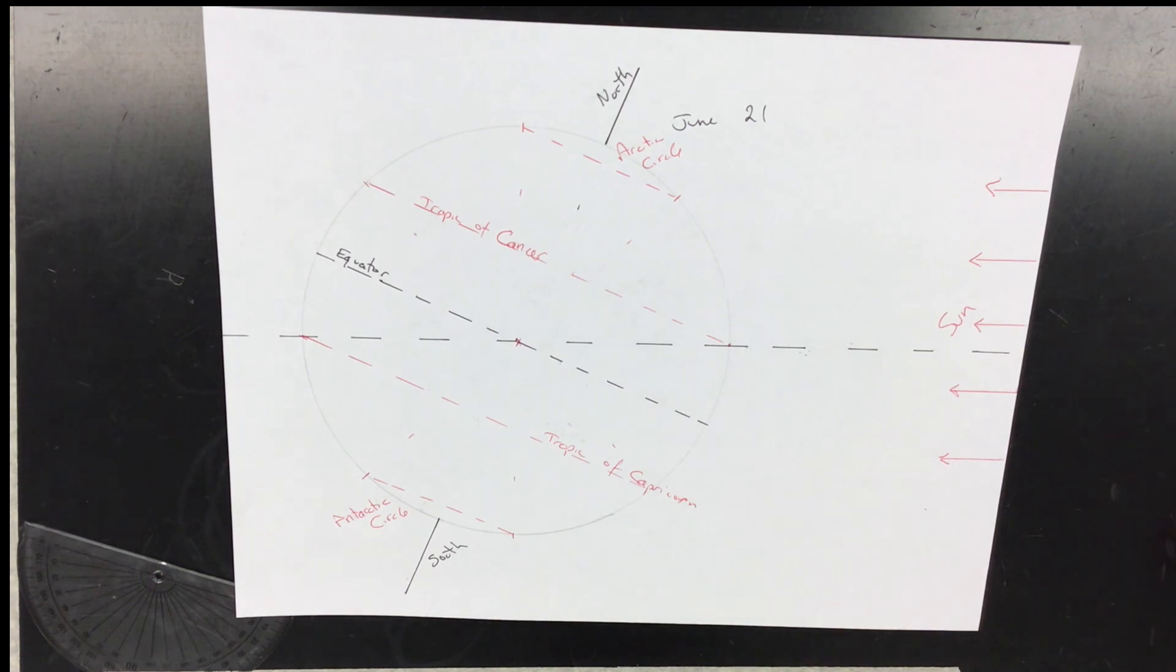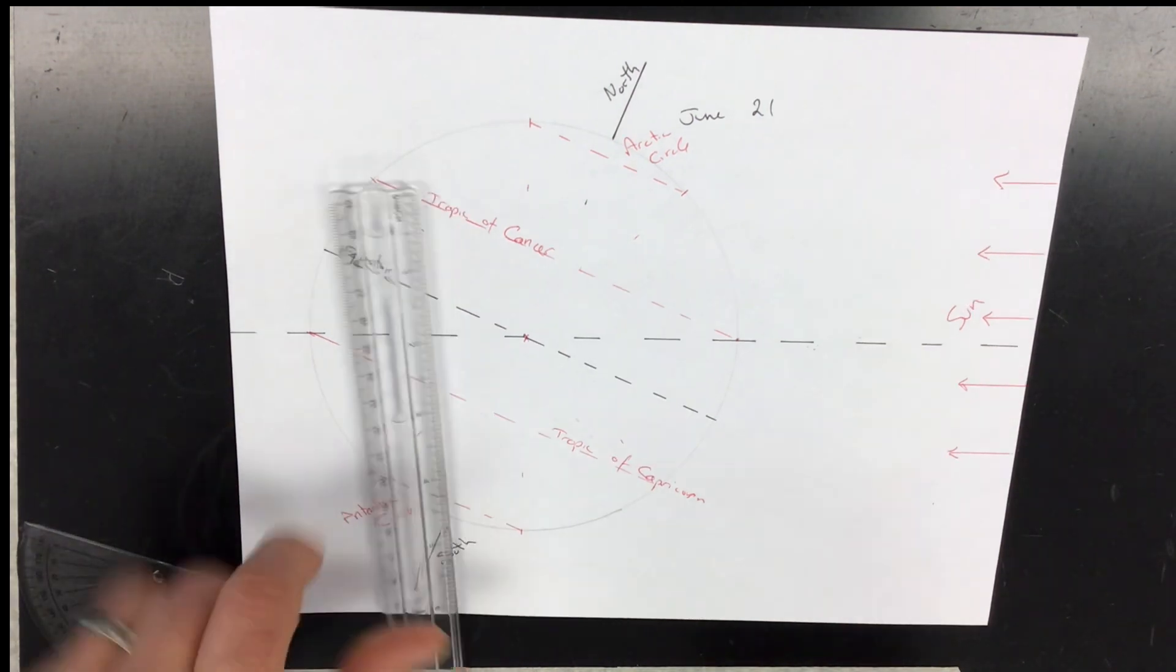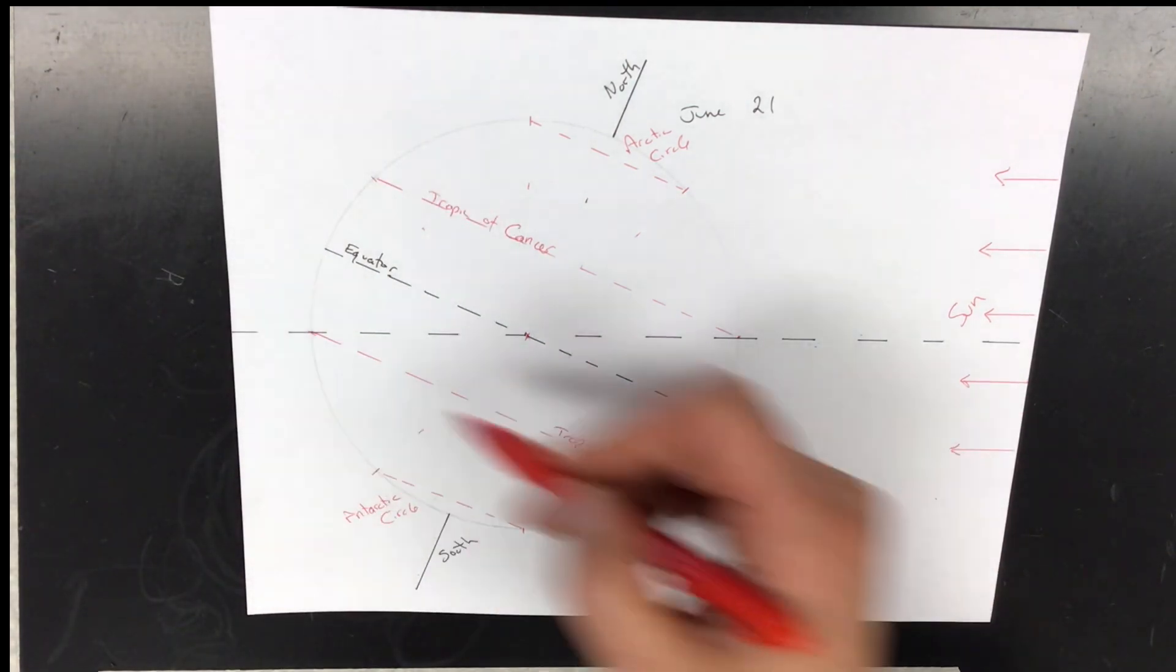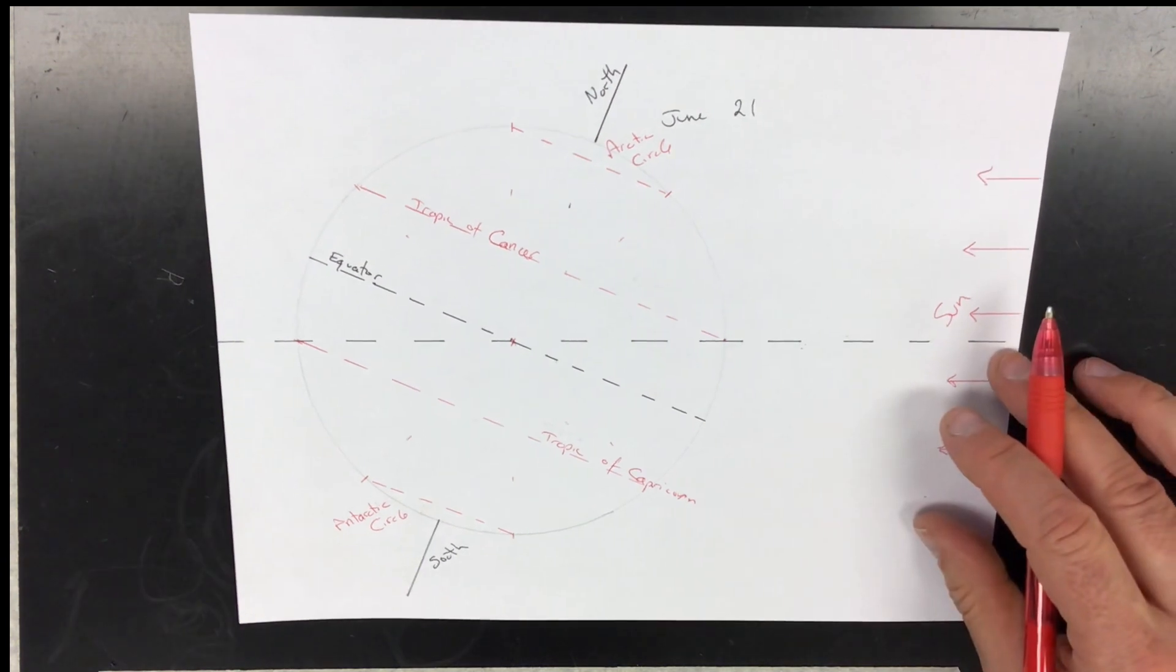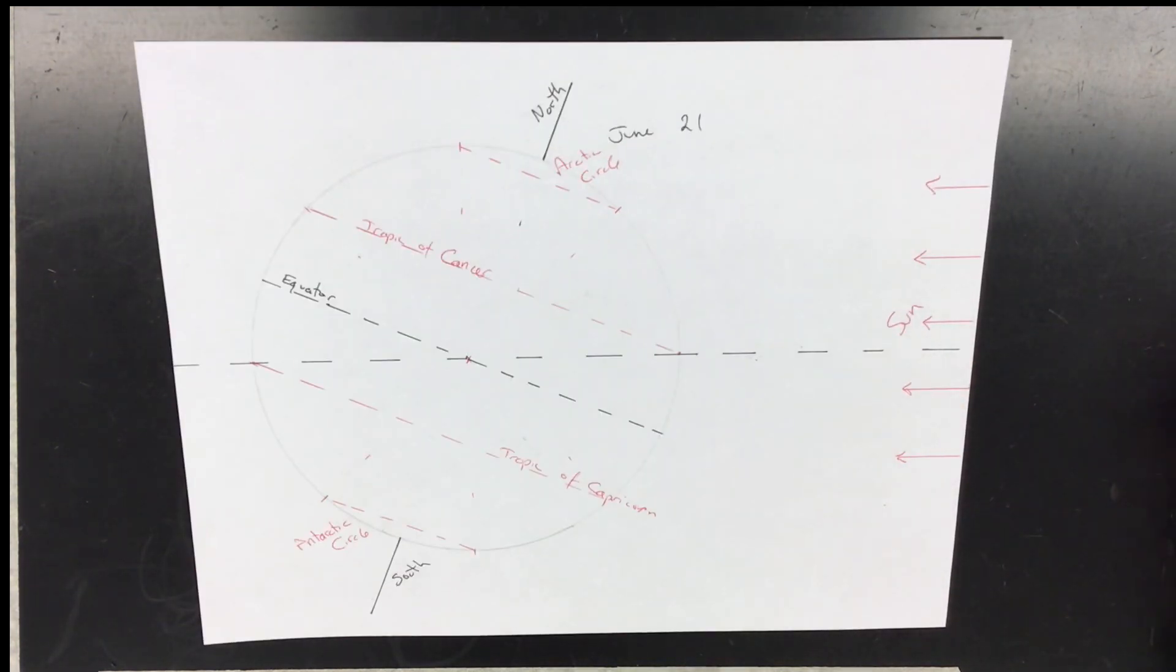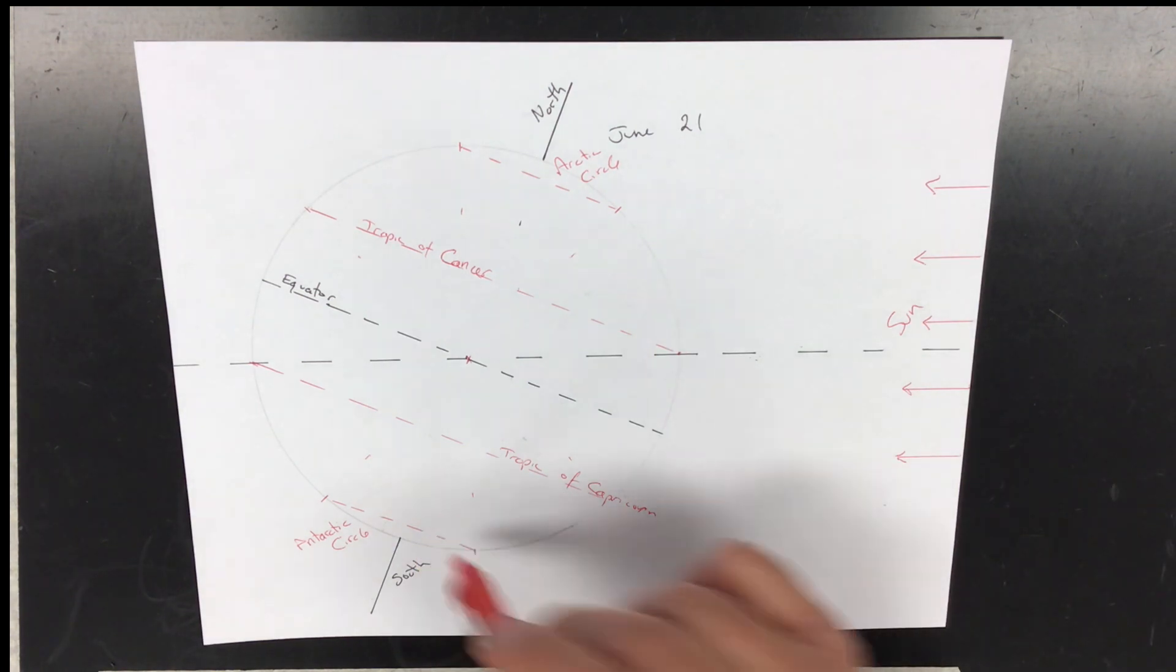So there you go, that's how you draw those things. It's actually relatively simple. It shows two different angles based on the equator and the North and South Poles. That explains the seasons. Again, June 21st, first day of summer in the Northern Hemisphere, first day of winter in the Southern Hemisphere.